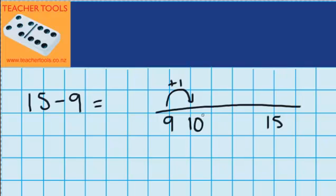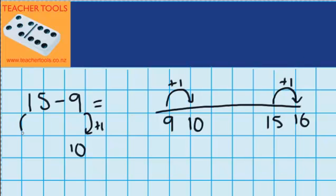So the only way to keep that distance the same is to make the 15 also one bigger. So the 15 would become 16. You can see the distance between 9 and 15 is exactly the same as the distance between 10 and 16. We changed the 9 into a 10 by adding 1, and to keep that distance the same, the 15 became 16. So 16 minus 10 is 6, and 15 minus 9 is also 6.